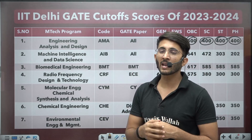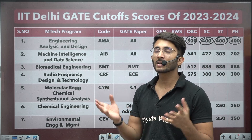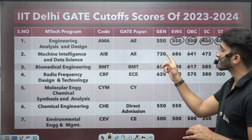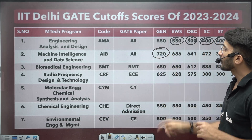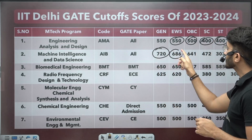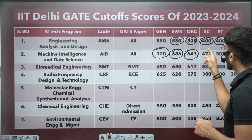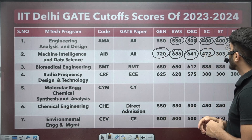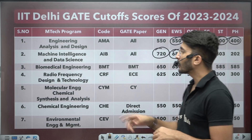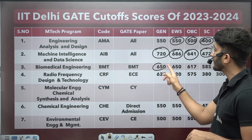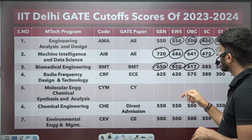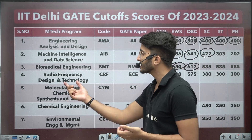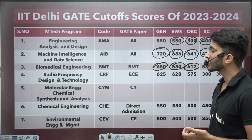For Machine Intelligence and Data Science, the cutoff is 720 for General, 686 for EWS, 641 for OBC, 472 for SC, and similarly for ST. For Biomedical, the cutoff is 650, 650, 617 for respective categories. For Radio Frequency Design and Technology, EC students who write the GATE paper with EC are eligible for this particular course.